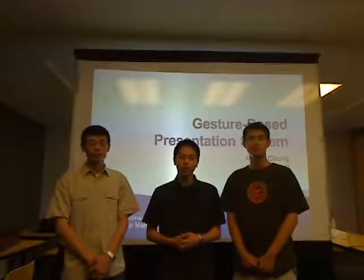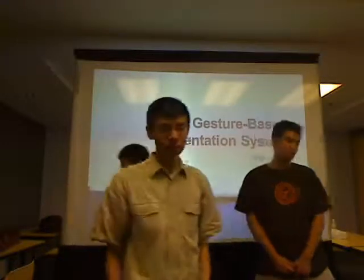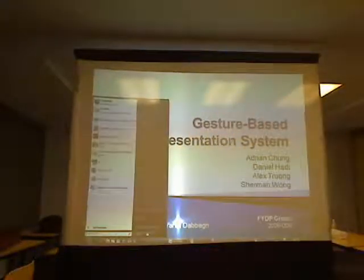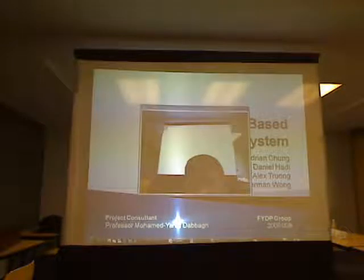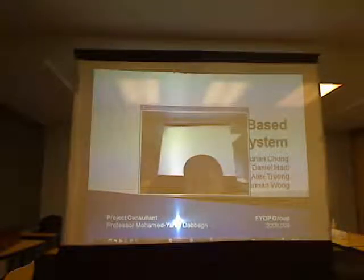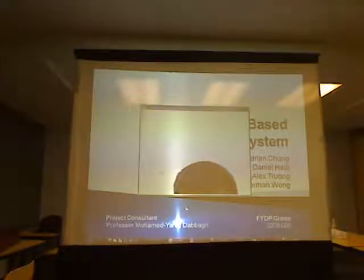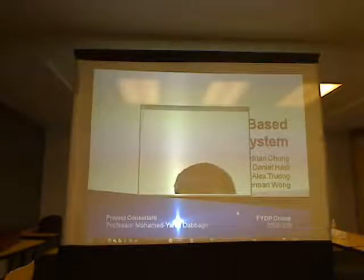We'll start off by showing you the calibration process. The web camera is taking in a raw feed of whatever it can see, as you can see here. What the calibration process does is that you click the four corners of the desktop, and it will transform the image so that it is as if the user is actually seeing the desktop straight on.